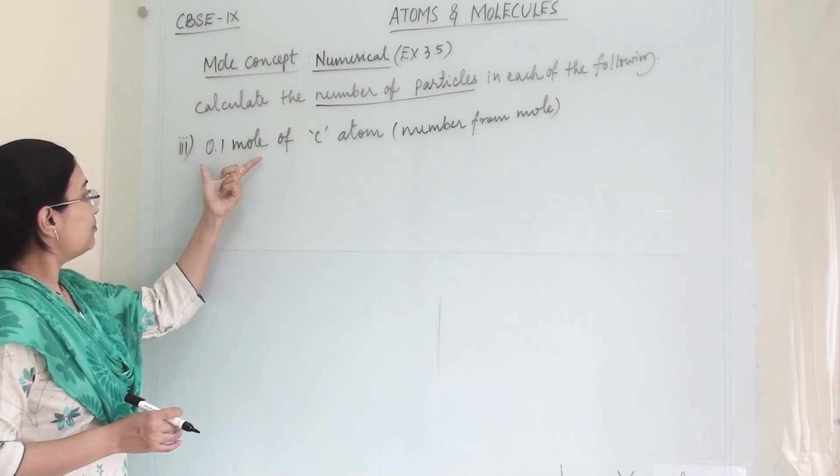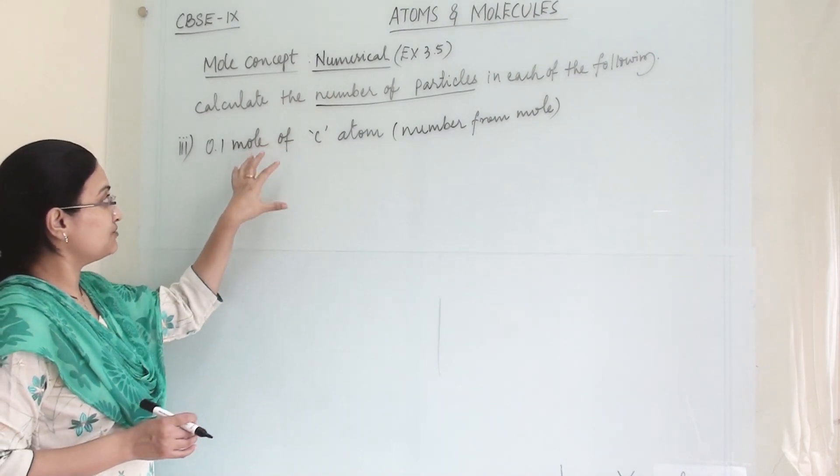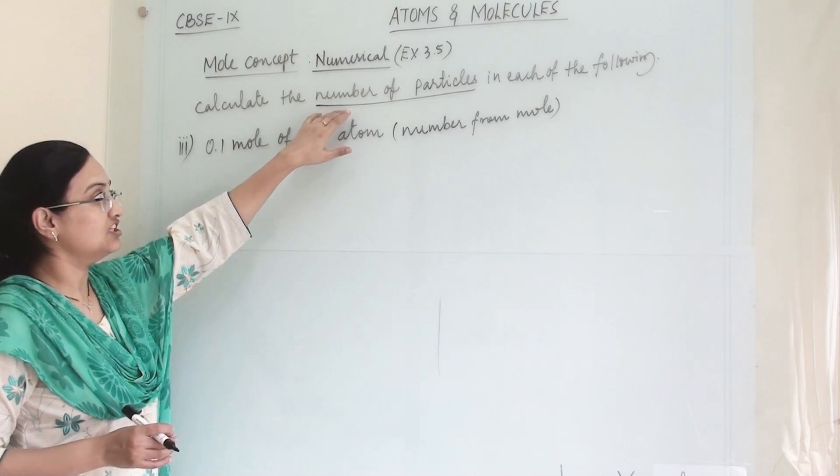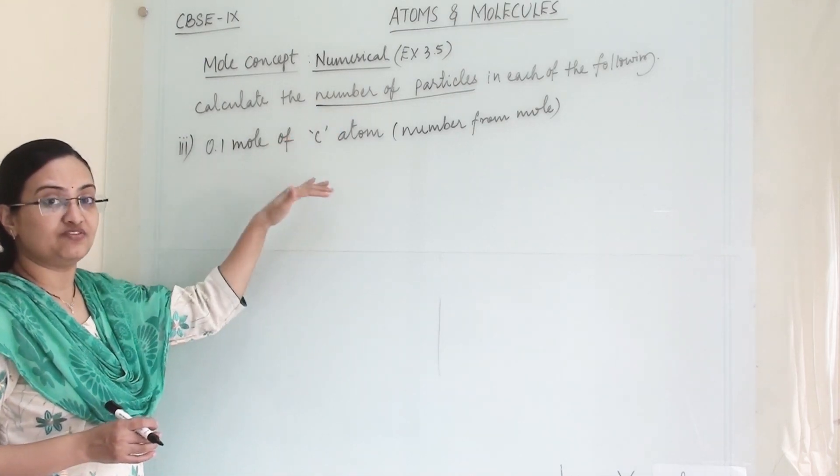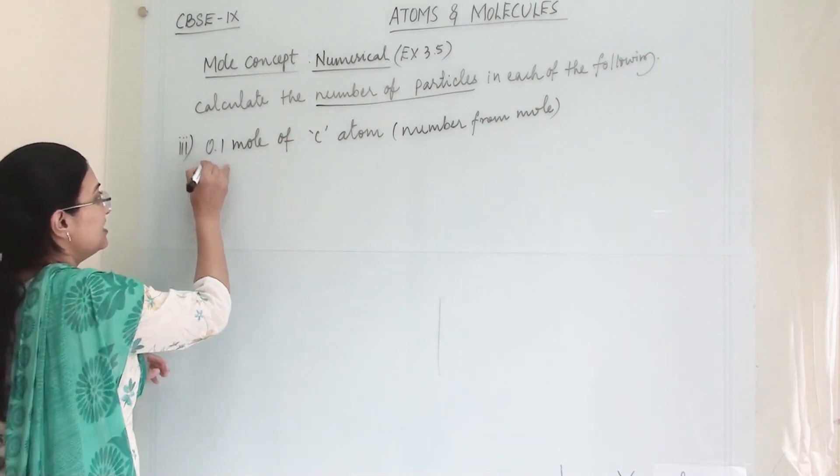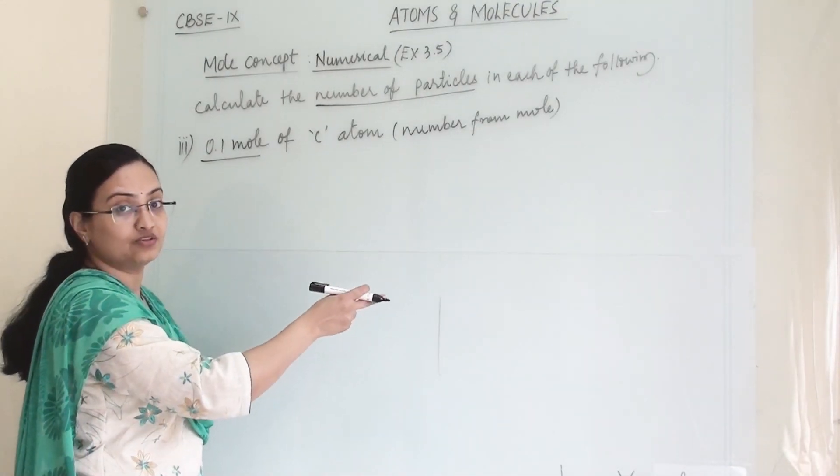In the third question, the detail is 0.1 mole of carbon atom. From this we have to find the number of particles. This is very easy because the mole has been directly given to us.